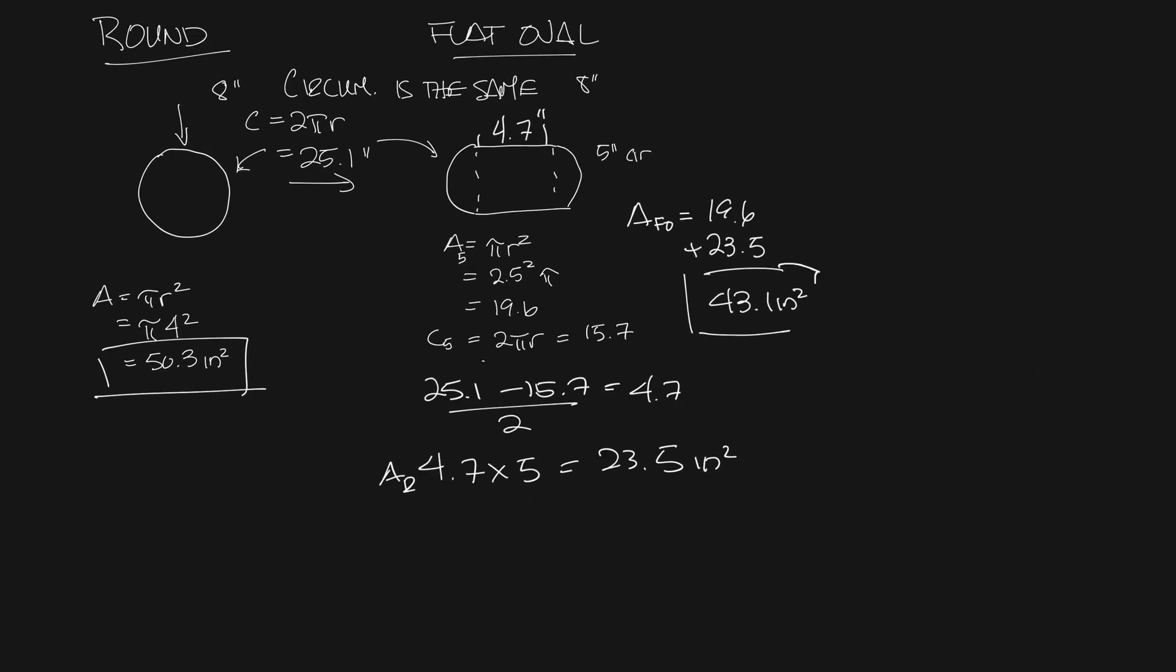So this 8 inch flat oval is really the equivalent of about 5.7 inch round. So we'll call that a 6 inch round ductwork.